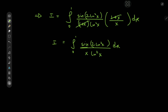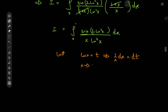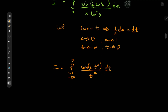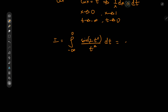The substitution here becomes quite evident. We let log x equal t, which implies that one over x dx equals dt. So now as x tends to zero, t tends to negative infinity, and as x approaches one, t approaches zero. So I is now the integral from negative infinity to zero of sine of two t squared over t squared dt. Notice that we're integrating an even function of t, so instead of integrating from negative infinity to zero, it's the same as integrating from zero to infinity — giving us the integral from zero to infinity of sine of two t squared divided by t squared dt.